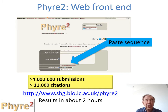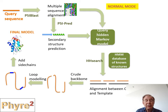So how does PHIRE work? You simply paste in your sequence into a window, give your email address, and then click go. We've had over 4 million submissions to PHIRE2 and its predecessor, and the papers describing this and the predecessors have over 11,000 citations. Importantly, you get your results back in about 2 hours.